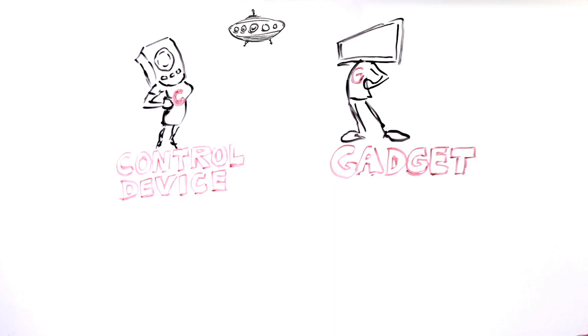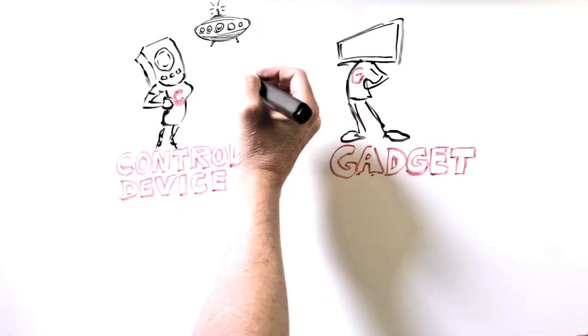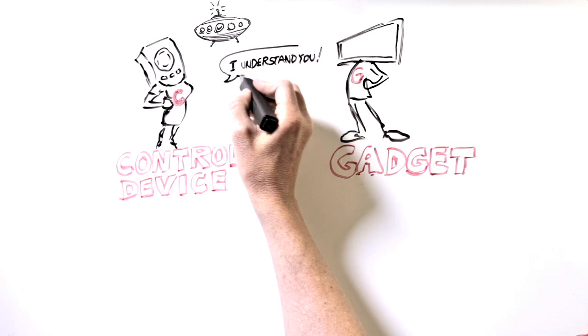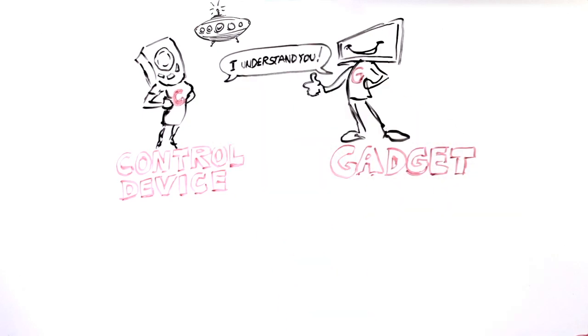Processors act as interpreters so that all the control devices and gadgets communicate seamlessly. Now that all the control devices and gadgets can understand each other, they need a way to send messages back and forth.